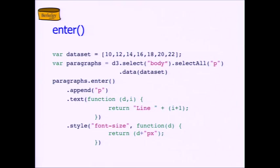So here's a typical example. In addition to the code we had before, paragraphs is defined as: select the body, select all the P's, join with the data set. The enter of paragraphs will append a new paragraph for things that didn't match. We're going to add a text attribute to that paragraph, because a paragraph without text is not very interesting. That paragraph text attribute is going to say 'line i plus one'. In D3 anonymous functions, the first argument is the data item. The second argument is a counter — an index into the data item list. So if you're the ninth thing in the data set that didn't find a match, this will say 'line nine'. Then we style it using the contents of that data to color it.